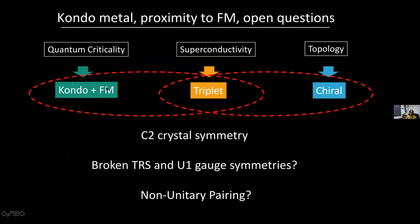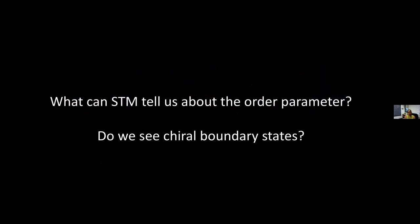So we have a lot of interesting stuff going on here. We have potential triplet superconductivity, quantum critical behavior, potential broken time reversal symmetry from the Kerr effect, and it's possible this material has non-unitary pairing. The question is what else can we learn from STM studies, and if this is indeed a topological superconductor with broken time reversal symmetry, do we see any evidence for boundary states?